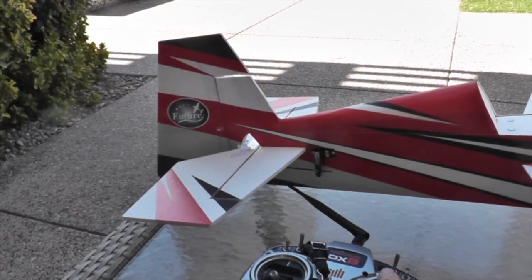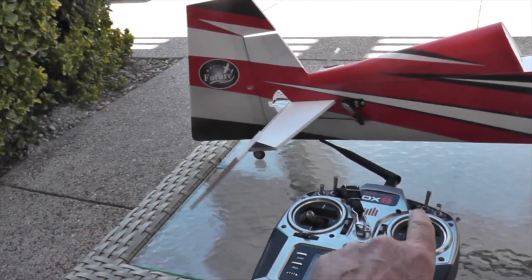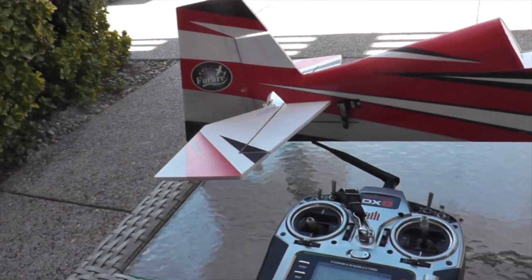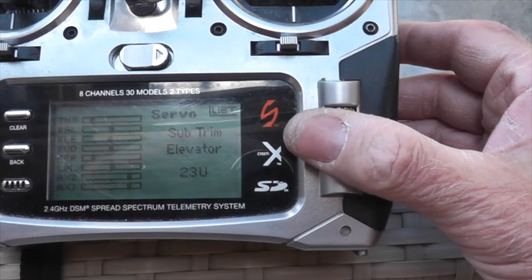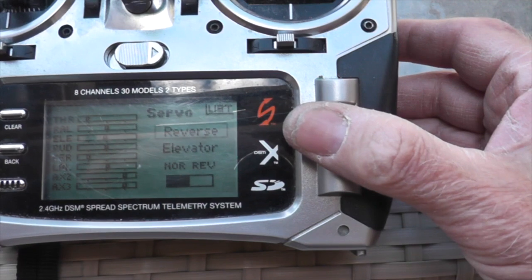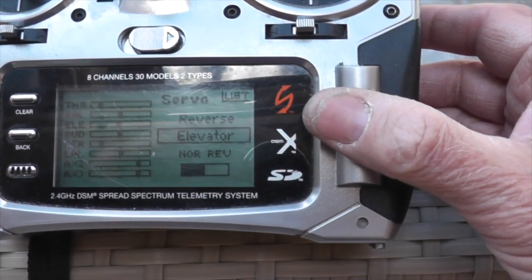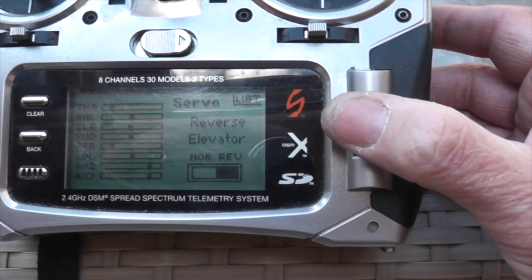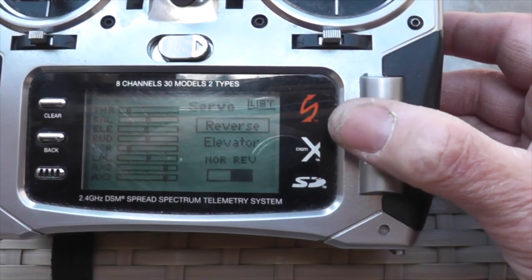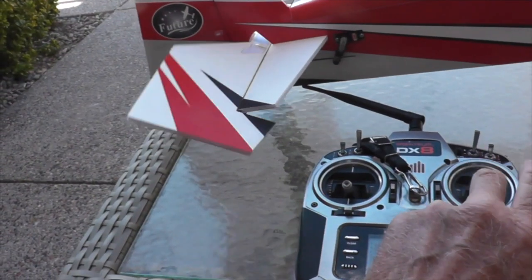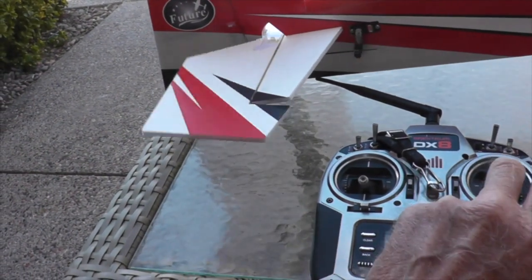So the elevator looks good but as you can see it's going in the wrong direction. It's going down when it should be going up. So we'll just go into the transmitter and reverse it. We go from sub trim to reverse, select reverse. There's the elevator right there, just go in and switch that. And now we should be okay. Yeah, now it's going the right direction, great.